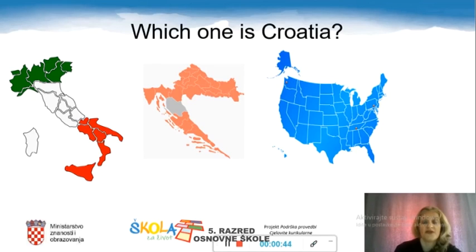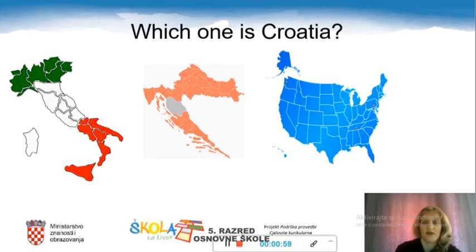Which of these three maps is a map of Croatia? Is it the first one, the one in the middle, or the blue one? What do you think? Of course it's the one in the middle, the second one. And do you maybe know which country is the first one? That's Italy. And the blue one? These are the United States of America.